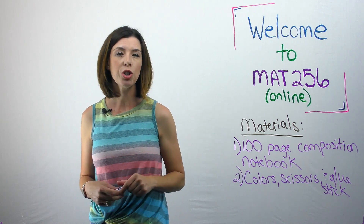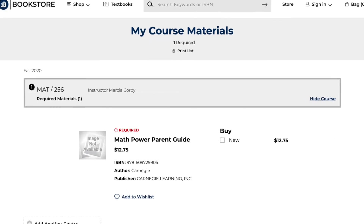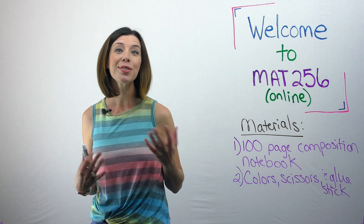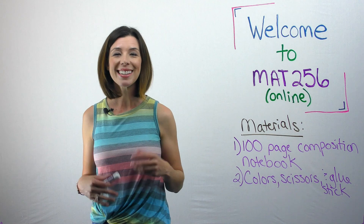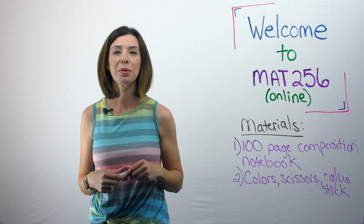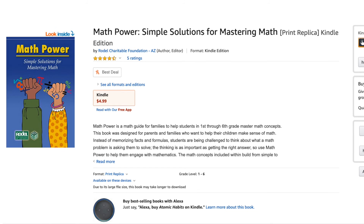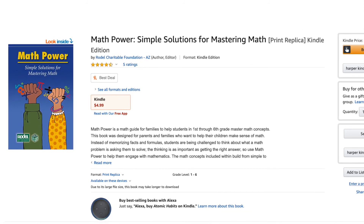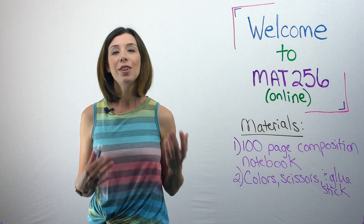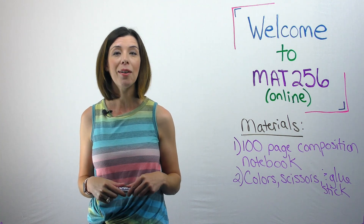You'll also notice that the course requires you to buy a $15 book from the bookstore called Carnegie Learning, formerly called Math Power. It was written for parents to help them understand Common Core math strategies, and the beauty of it is that it's half in English and half in Spanish. This is not a textbook you'll sell back — it's one you'll keep and add to your classroom library. You can also order a digital version on Amazon, Kindle, or the iTunes store for $5, but that version does not include Spanish, so I'd recommend getting the $15 print version. It will also be helpful for Math 257.